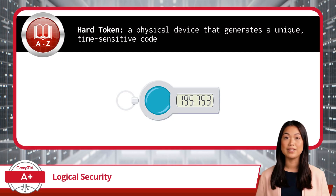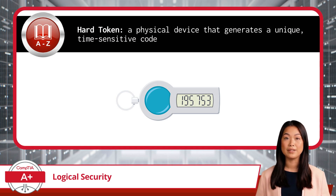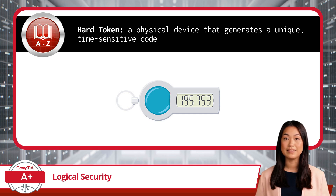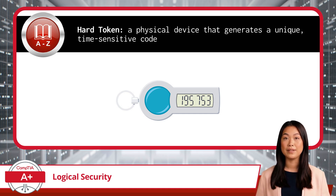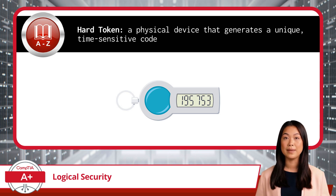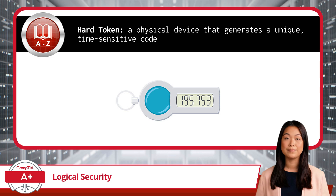Next, there are hard tokens. A hard token is a physical device used as part of an MFA system to enhance security. It typically generates a unique, time-sensitive code that a user must enter in addition to their password when accessing a system.